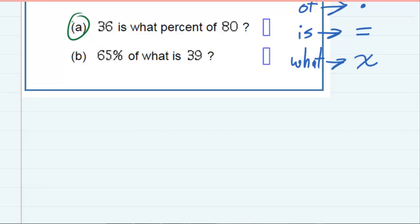So the sentence starts off with 36. I'm just going to bring that part down. But then it says 'is,' and my translation says that that means equals. And then I see what percent.